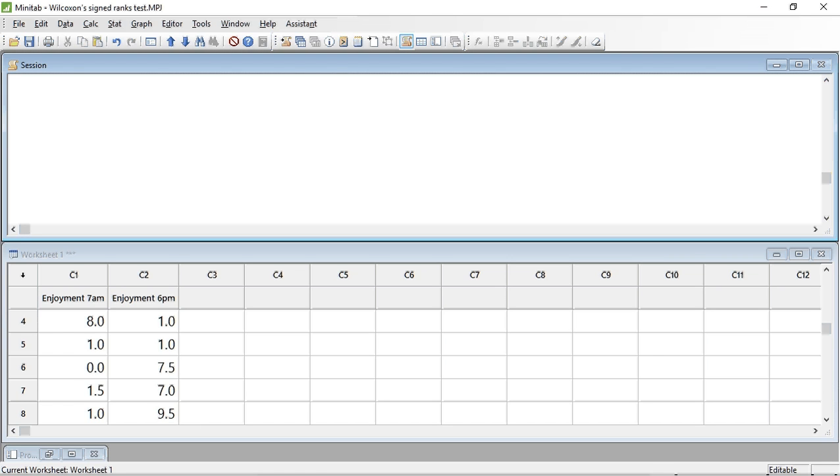So first we need to calculate the difference. You can see that I have entered the data from table 11.2 into Minitab in two columns, with data from the same individual being in the same row. We are now going to calculate the difference between these paired data values and place it in a new column as follows.